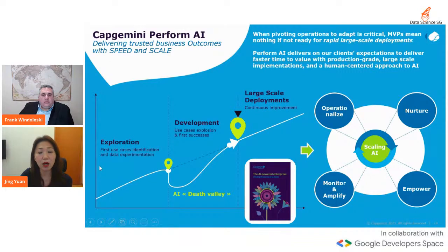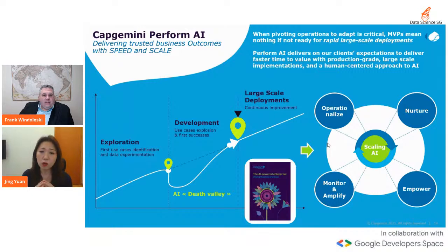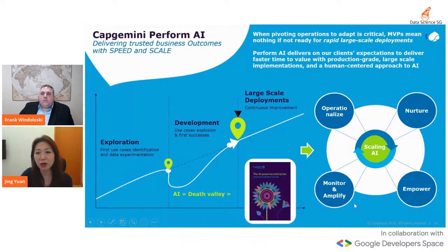On the right-hand side, we found only 13% of organizations are truly scaling AI throughout multiple teams. Many organizations do productionize AI models but just for one or two business units — for example, marketing solutions or supply chain — but not across the organization. The next question is how to bring organizations to large-scale deployment. This is what the Capgemini PerformAI portfolio is focused on: not just building fancy AI solutions, but delivering business outcomes with speed and scale, bringing clients from exploration and development to large-scale deployment.